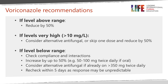If the voriconazole level is above range, the general recommendation is to reduce the dose by 50%. If levels are very high — more than 10 — consider an alternative antifungal or skip one dose then reduce by 50%. If levels are below range, compliance and interactions should be checked and the dose increased by 50 or 100 mg twice daily if on oral. A common change is from 200 mg twice daily to 250 mg twice daily. If the patient is on a very high dose of 350 mg twice daily or more, increasing usually results in neurological toxicity. Levels should be rechecked within five days of a dose change, given the drug's non-linear kinetics in adults.